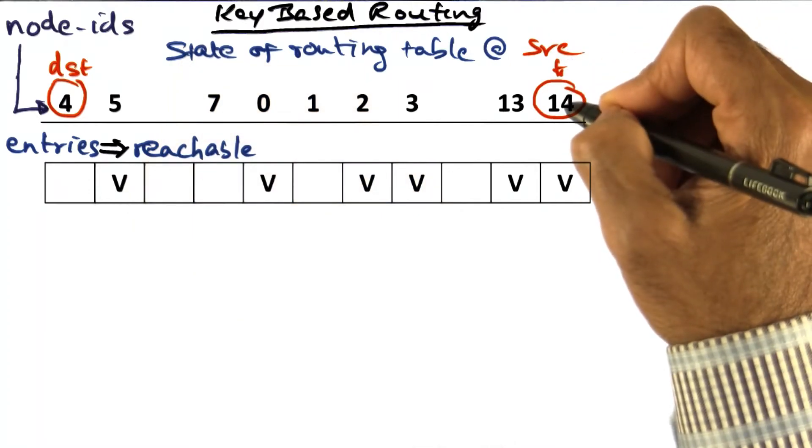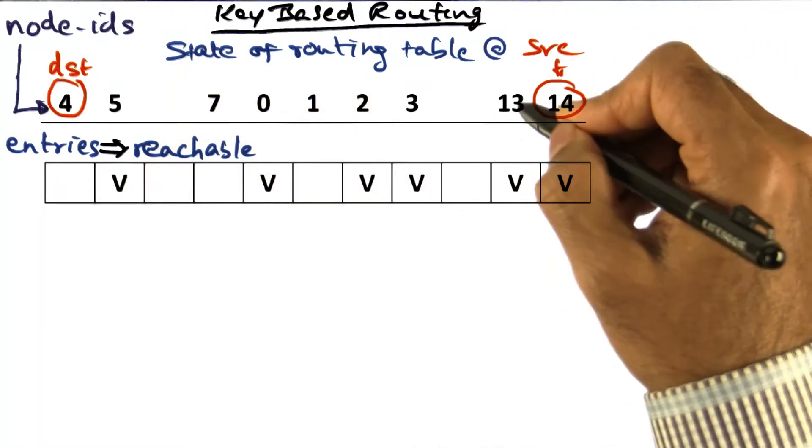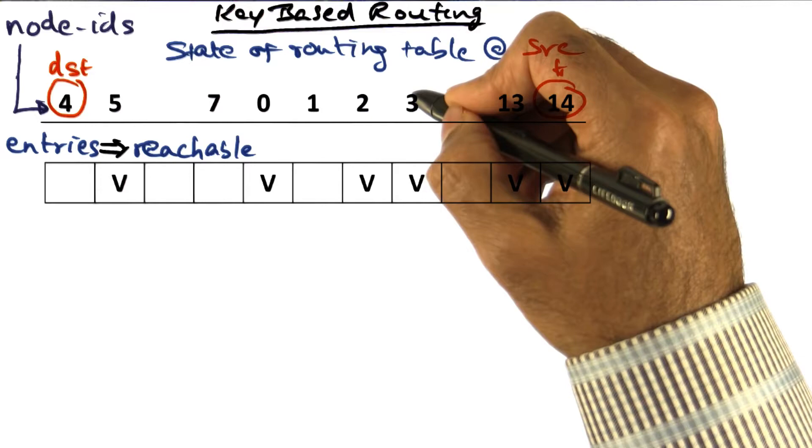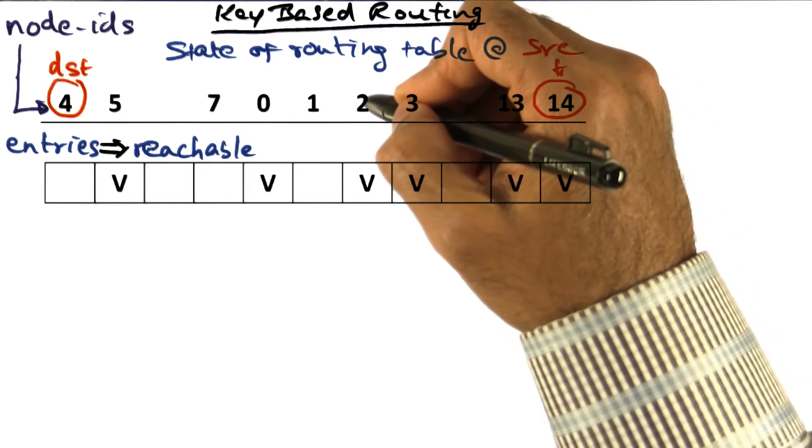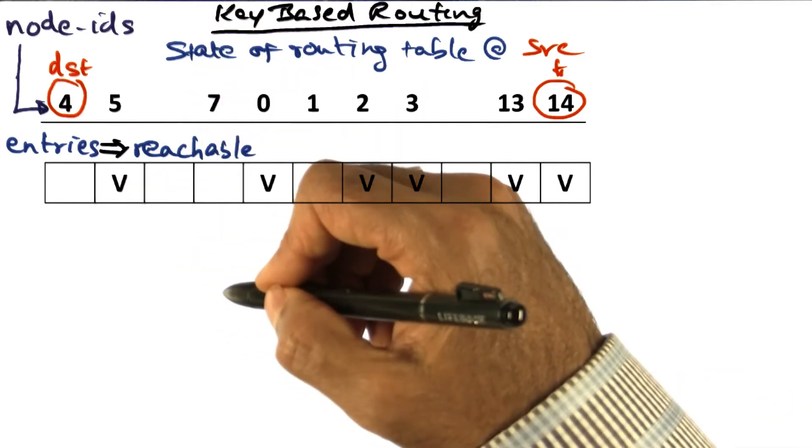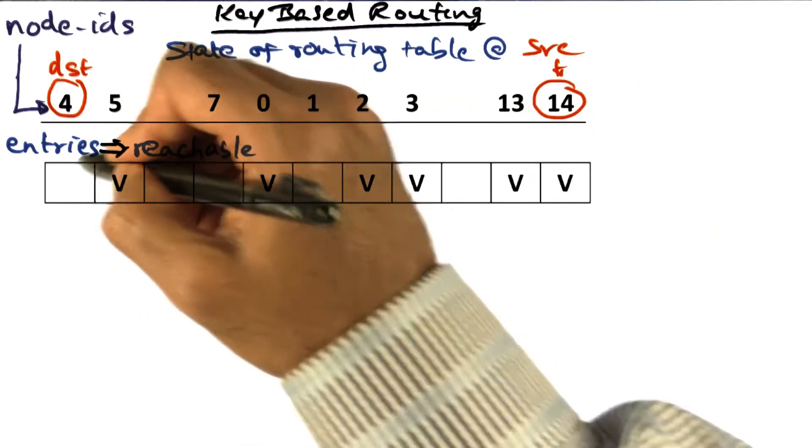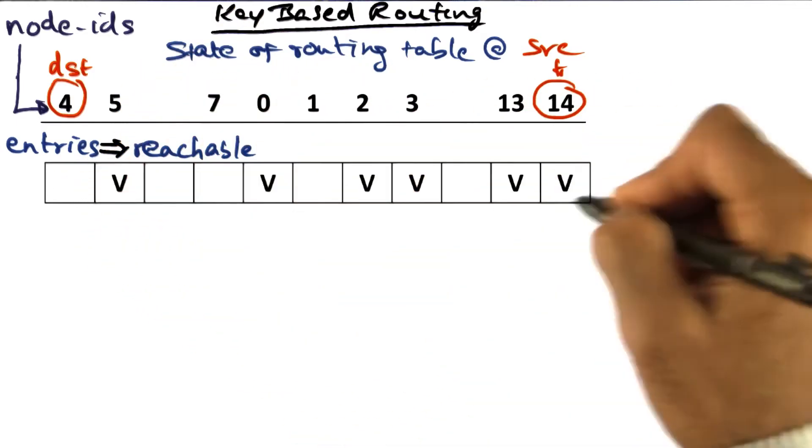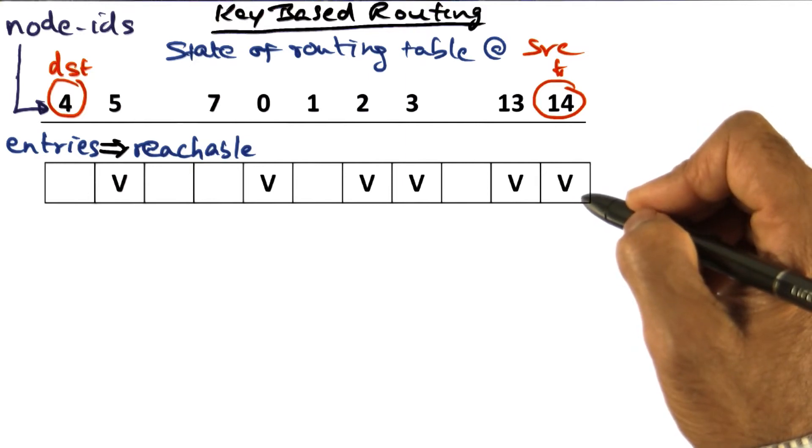From source node 14, I know how to reach nodes 13, 3, 2, 0, and 5. I don't know yet how to reach node 4, because that's not in my routing table at this point.